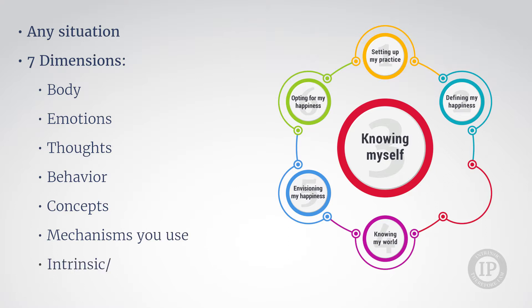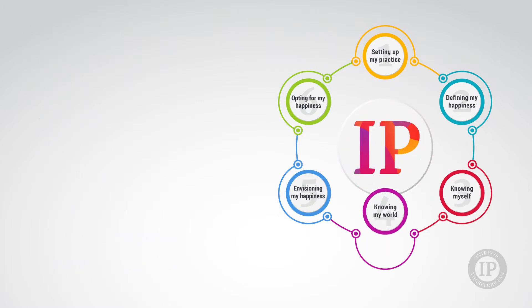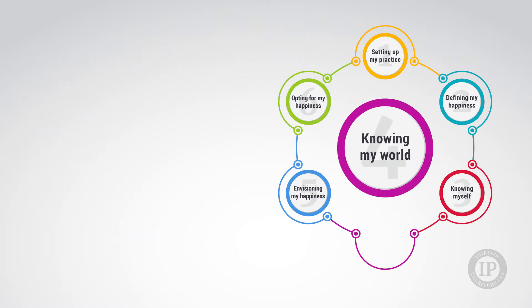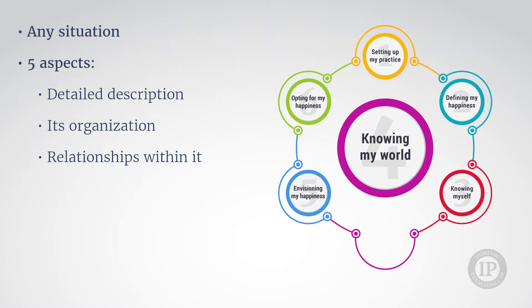The fourth step, entitled Knowing my world, is where you can learn about your world in any situation according to five aspects: namely, through a detailed description, through its organization, the relationships within it, and the rules and duties associated with it.